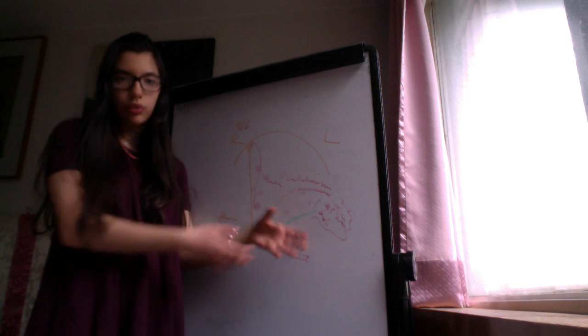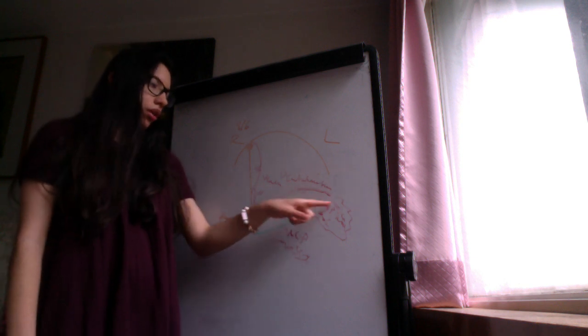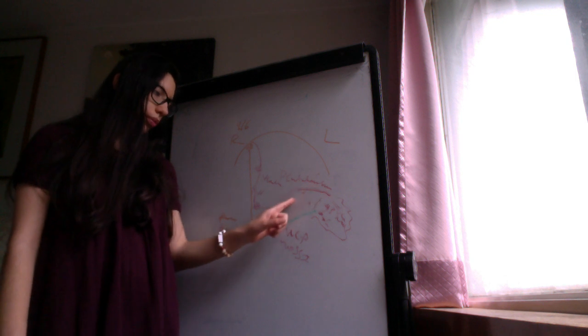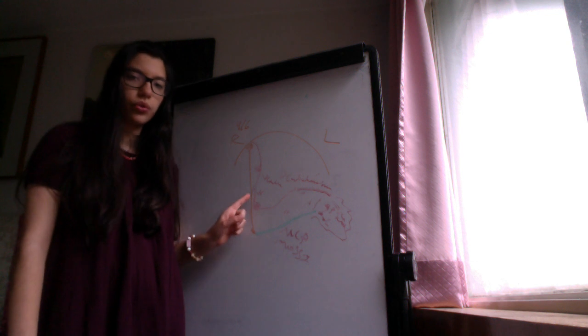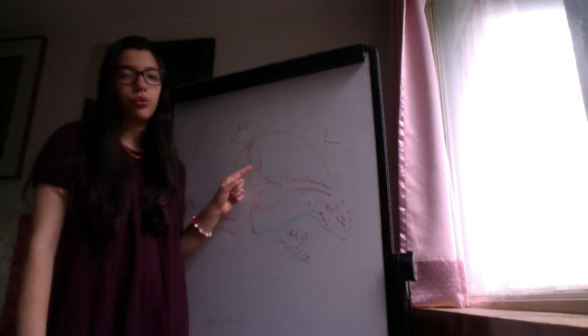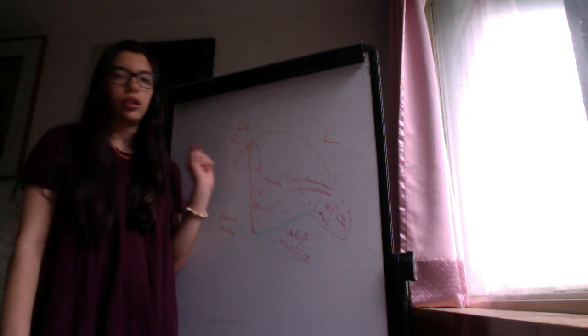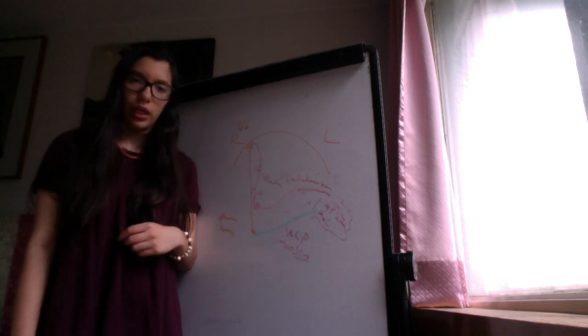Then these axons of the Purkinje cell, through the superior cerebellar peduncle, decussate. They go to the red nucleus, synapsing or not, ascend to the ventral lateral nucleus of the thalamus, and they go back to the upper motor neuron of the ipsilateral cerebral cortex.